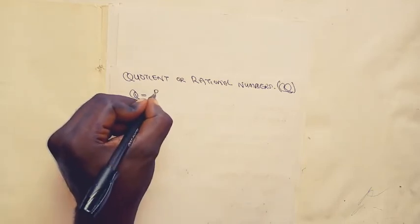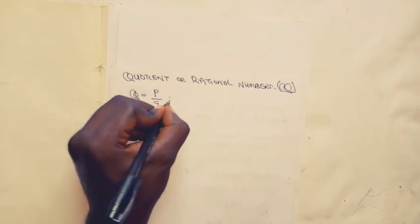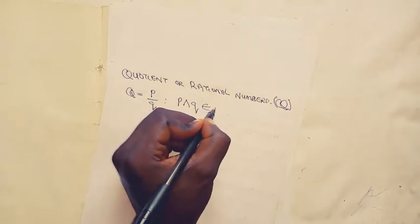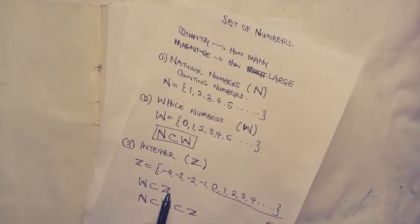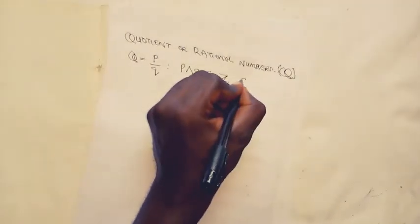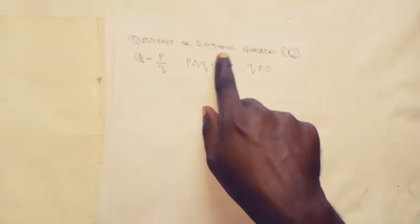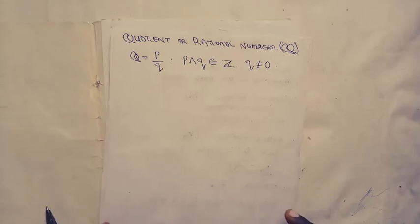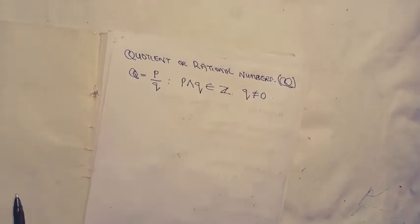Rational numbers can be written in the form p over q, such that p and q belong to integers, but q cannot be equal to zero. The term rational comes from the word ratio, meaning comparing two quantities. So any number in fractional form belongs to the quotient set.